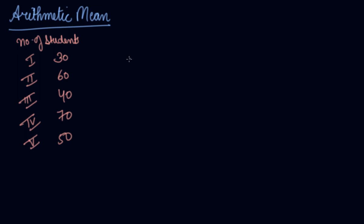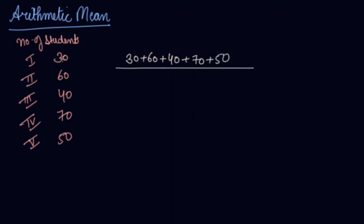These are the items in the series. So what is the arithmetic mean? 30 plus 60 plus 40 plus 70 plus 50, divided by 5. That is 60 plus 40 equals 100, 70 plus 30 equals 100, so it's 250 divided by 5, which is 50.